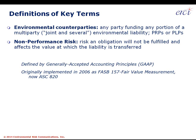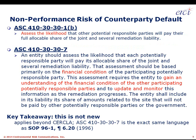Non-performance risk refers to something defined in ASC 820 — the risk that an obligation will not be fulfilled, and it affects the value at which a liability is transferred as well as the value at which a liability is placed on a company's books. Non-performance risk means the premium that needs to go on top of the liability valuation for paying out monies to a third party — the premium for assuming the risk that parties will not pay their share.